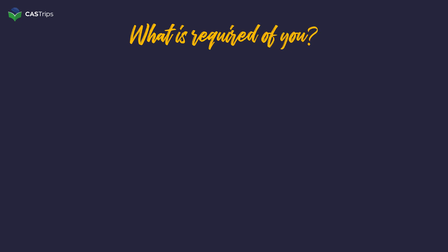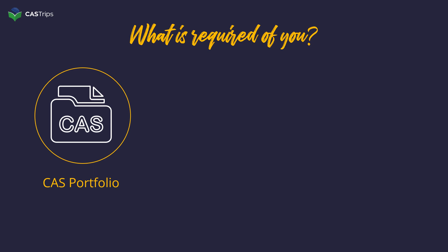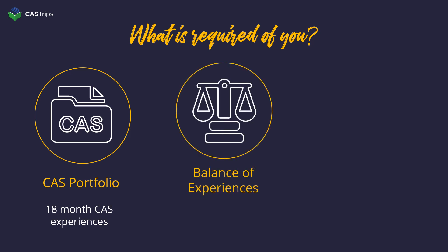So let's move on to the documentation expected of you throughout your CAS experiences. We'll begin with your CAS portfolio. You are expected to document all of your CAS experiences over the course of an 18-month period in a comprehensive CAS portfolio. Next is the balance of experiences. In this document you will need to showcase engagement with the balance of CAS experiences — we recommend at least three of each: creativity, activity, and service.